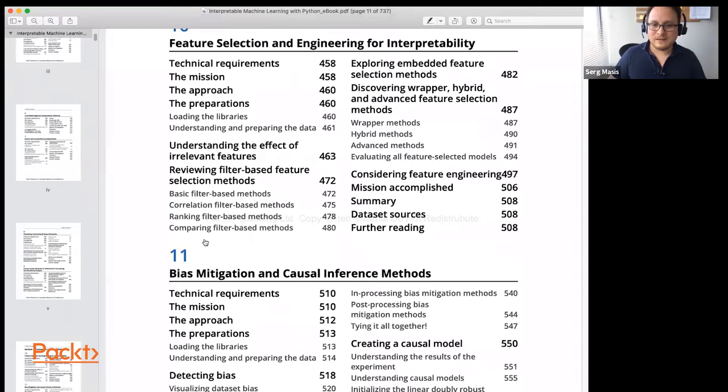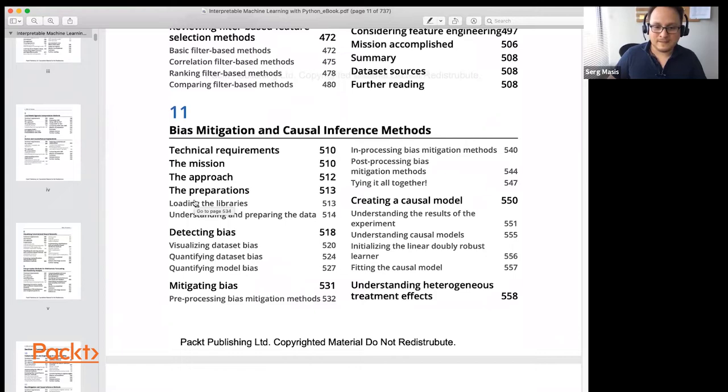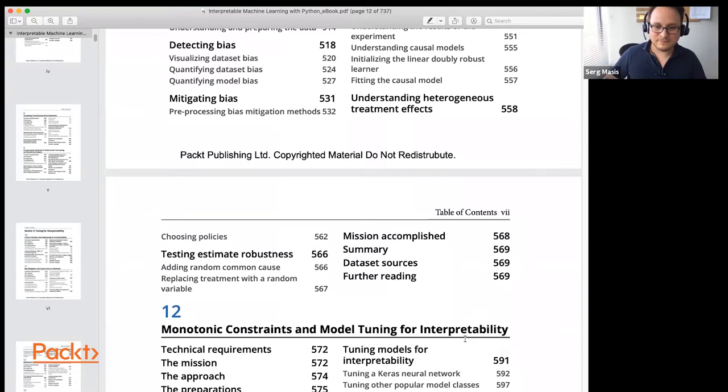This in particular is a very important chapter, bias mitigation. And then, also in the same spirit, monotonic constraints and model tuning for interpretability will also teach you how to mitigate bias, but using completely different tool set.